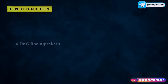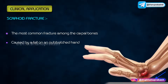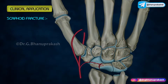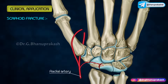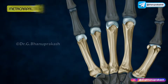Clinical Application - Scaphoid Fracture: It is the most common fracture among the carpal bones. It is usually caused by a fall on an outstretched hand and generally presents with pain in the anatomical snuff box. Sometimes, blood supply to the scaphoid is derived only from the arteries entering the bone from its distal end, so a fracture of the mid part of the scaphoid might result in deprivation of blood supply to the proximal portion of the bone, which may lead to avascular necrosis of that part.